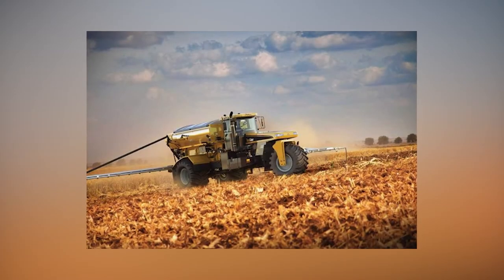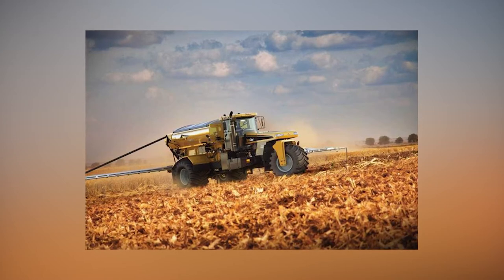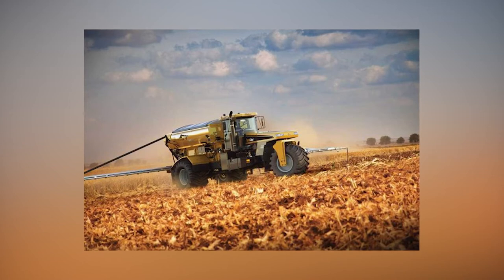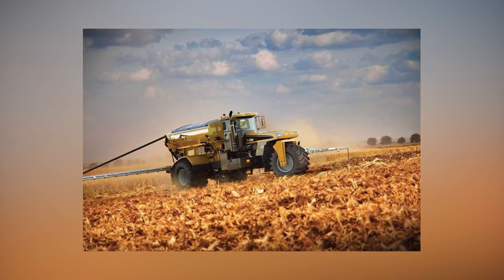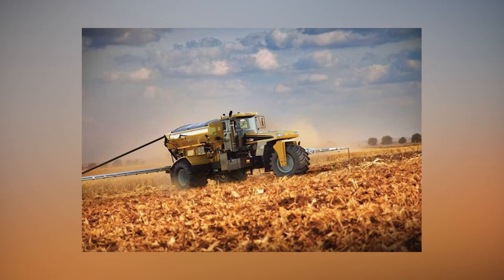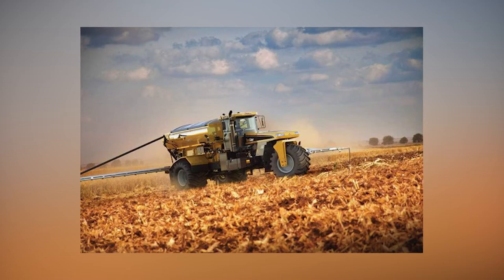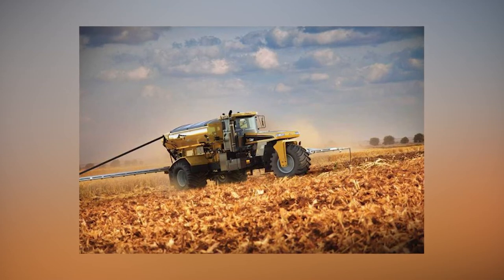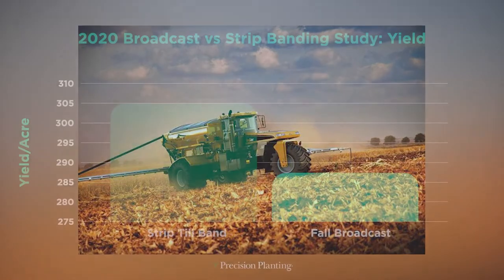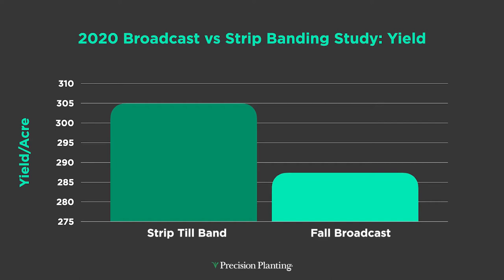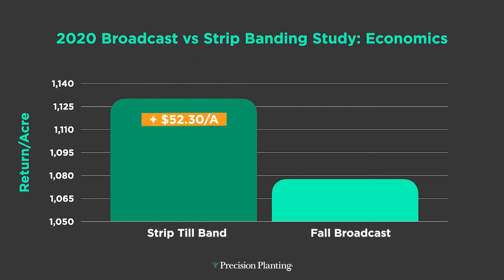Broadcast fertilizer application is very common — a lot of growers are still using this. It's super easy to call a retailer and say come on out and broadcast spread my fertilizer right on top of the ground. Some folks are doing tillage to incorporate it into the soil, while others doing reduced tillage like no-till or strip till are still leaving that fertilizer near the soil surface. When we compared banding versus broadcast fertilizer in corn this past year at the PTI farm, we saw some really interesting results: banding fertilizer gave us a 17.6 bushel advantage in corn.